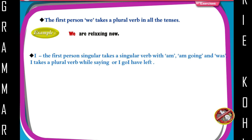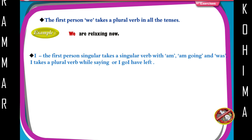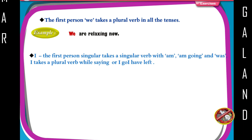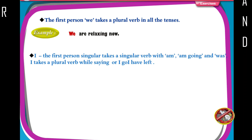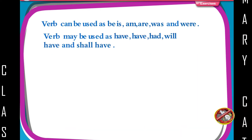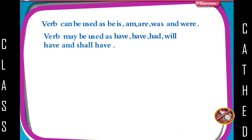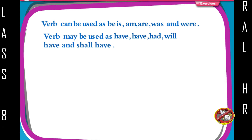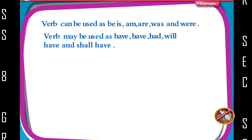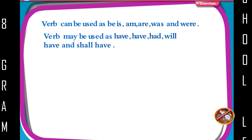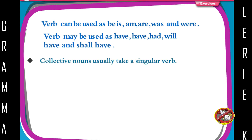'I', the first person singular, takes a singular verb with 'am' — as in 'am going' — and 'was'. 'I' takes a plural verb while saying 'I go' or 'I have left'. Examples: I am swimming. I have finished making the poster. The verb 'be' can be used as: is, am, are, was, and were. The verb 'have' may be used as: have, had, will have, and shall have.